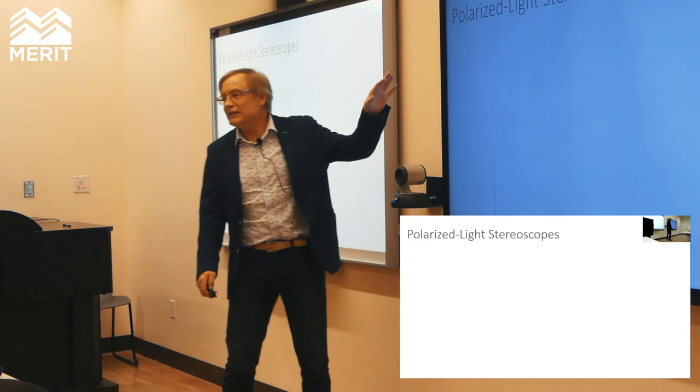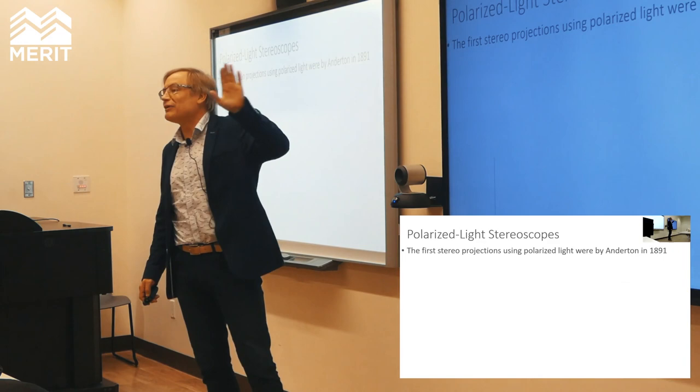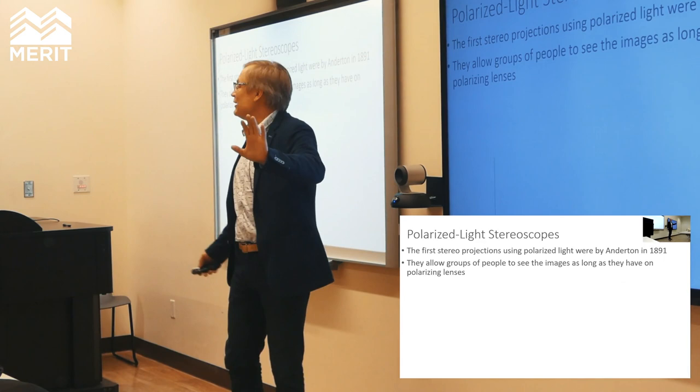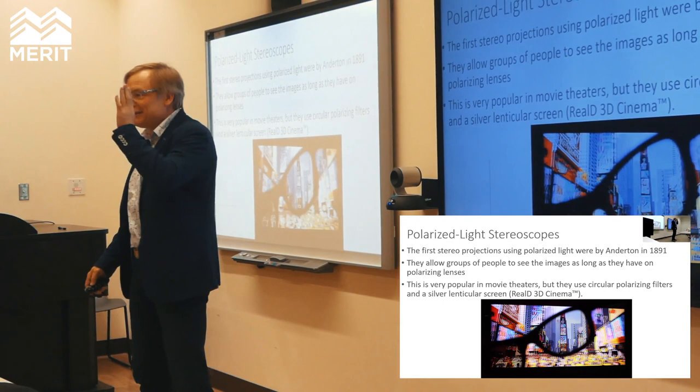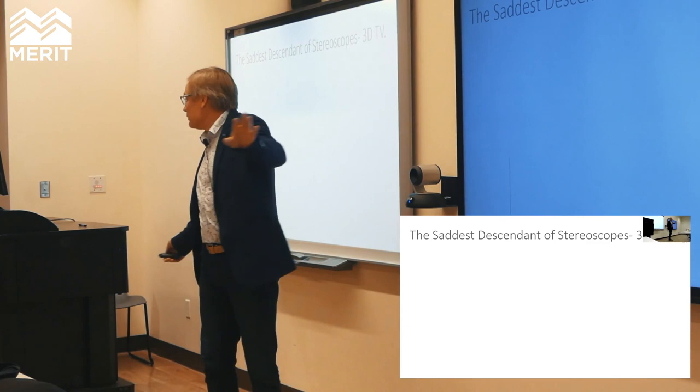Just a couple of quick things before I get into some heavy data. Most of the stuff you've seen are polarized light stereoscopes. Real 3D cinema at the theater — that's a circular polarized image giving a different feed to each eye. And that's reasonably popular; people find it entertaining at any rate.